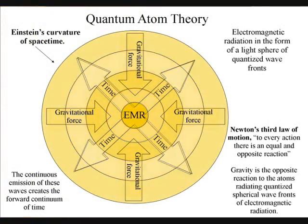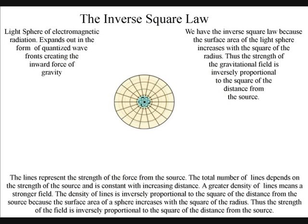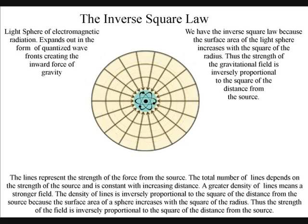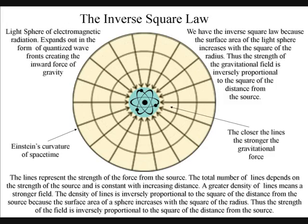Therefore, there is no instantaneous action at a distance. We have the inverse square law because the surface area of the light sphere increases with the square of the radius. Thus the strength of the gravitational field is inversely proportional to the square of the distance from the source.